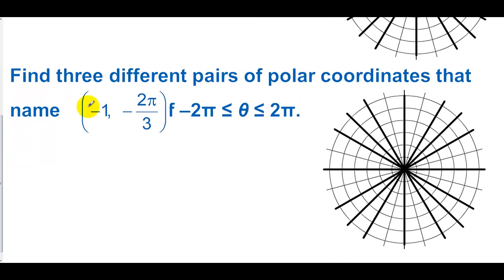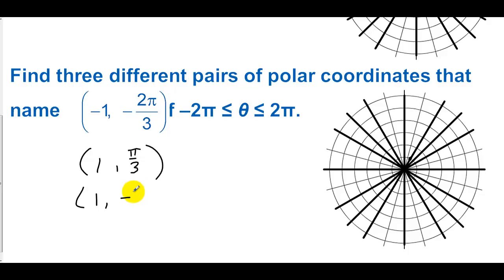Find three different pairs of polar coordinates naming the point (-1, -2π/3), with angles between -2π and 2π. Starting at -2π/3 with radius 1, going backwards gives us a reference point. Three representations: (1, π/3), going to π/3 with positive radius; (1, -5π/3), going negative 5/3 around; and (-1, 4π/3), going to 4π/3 with negative radius.